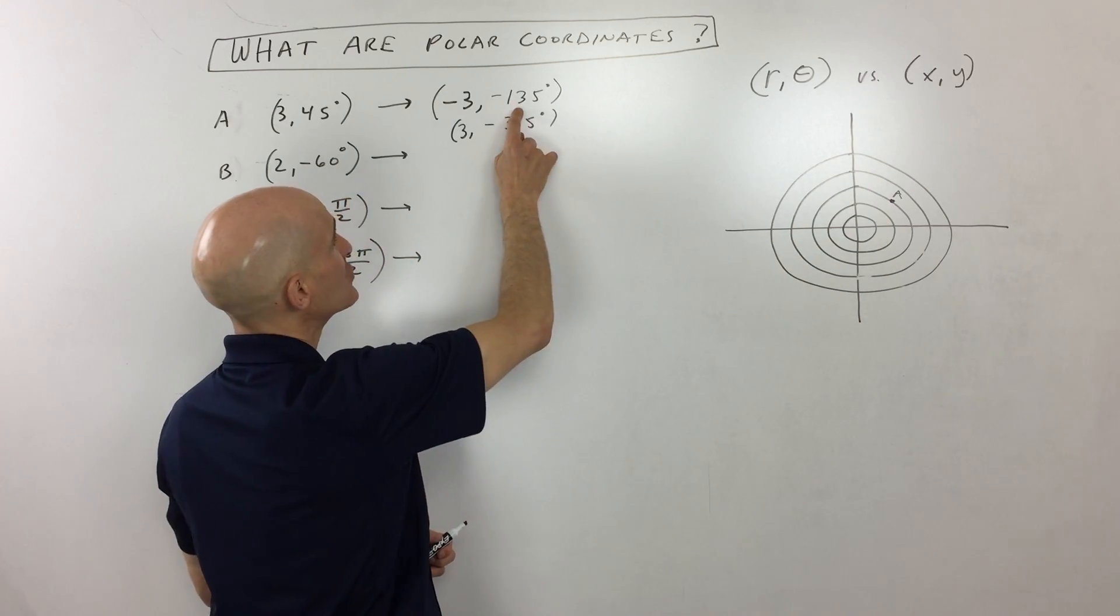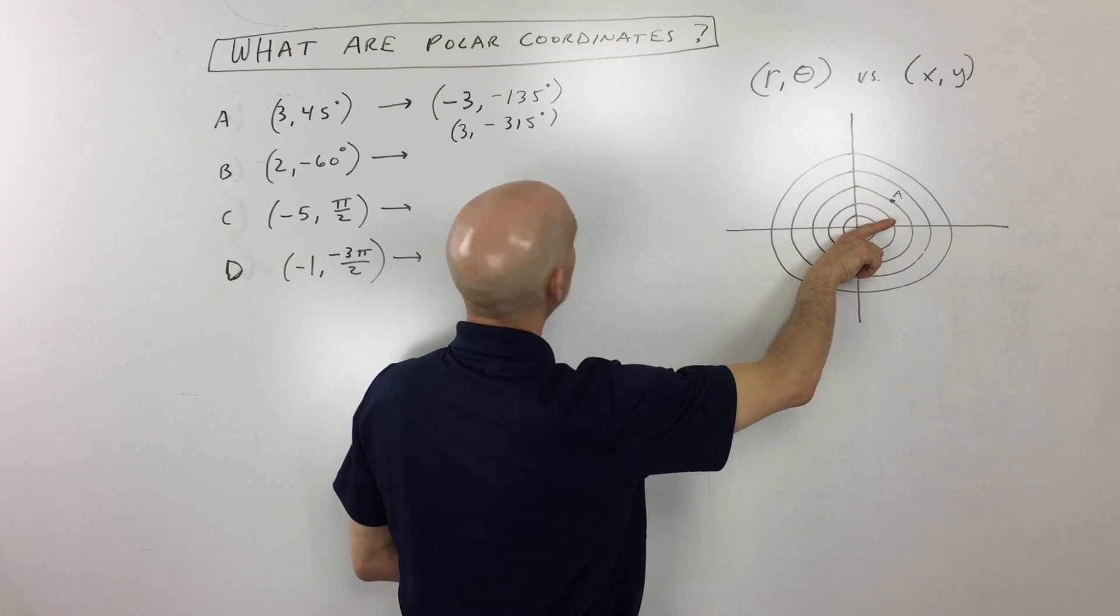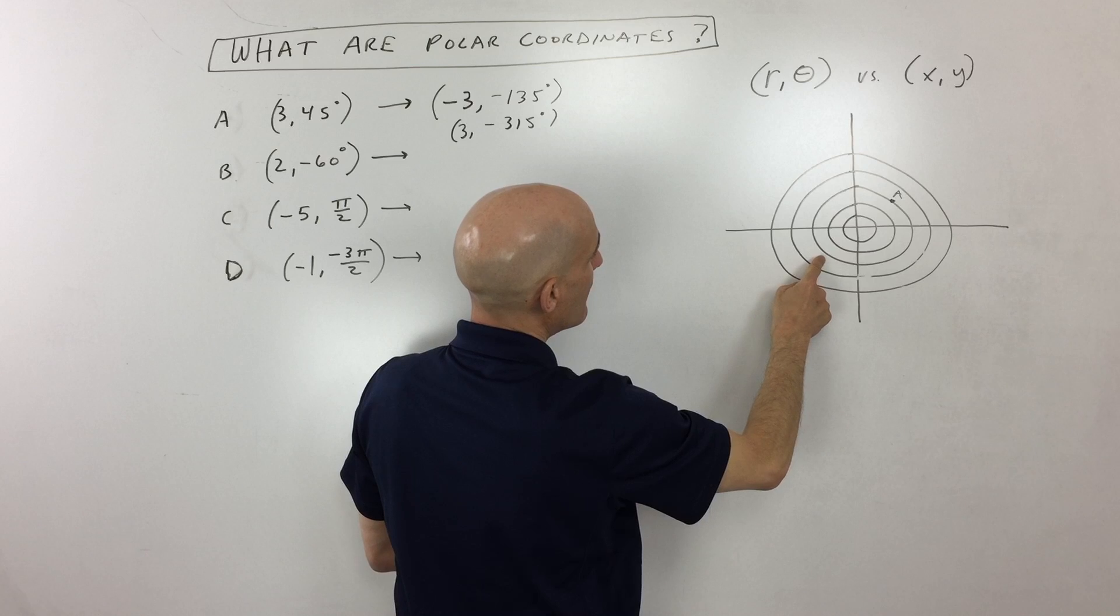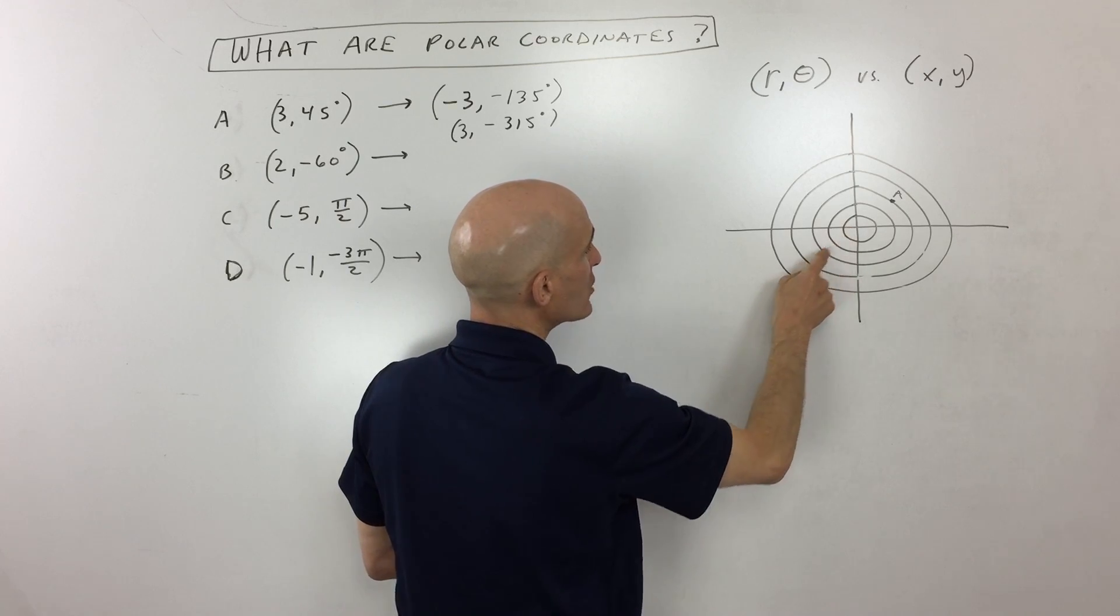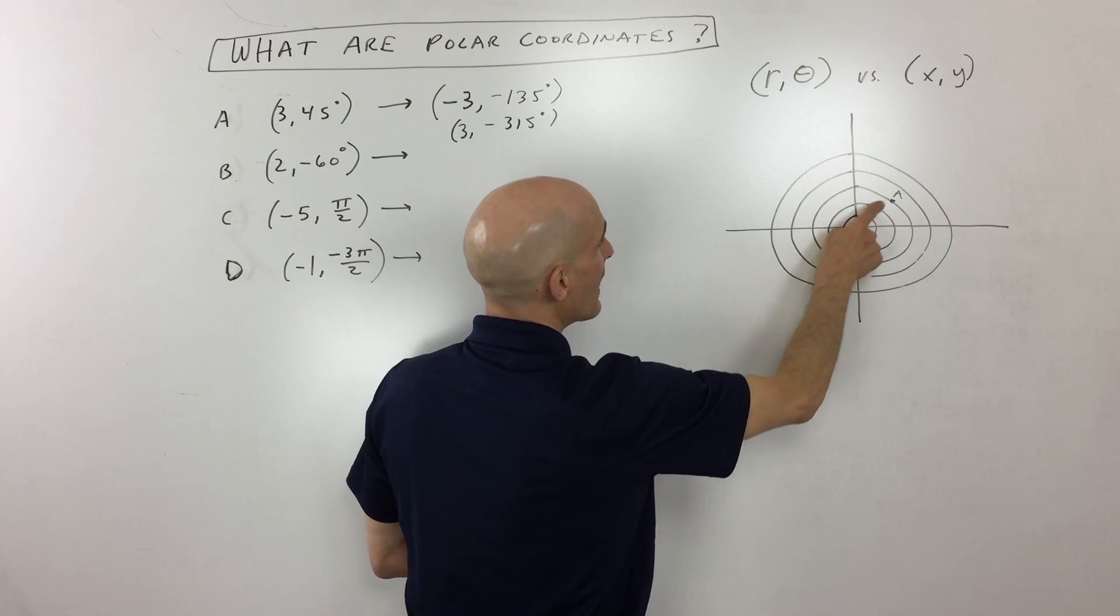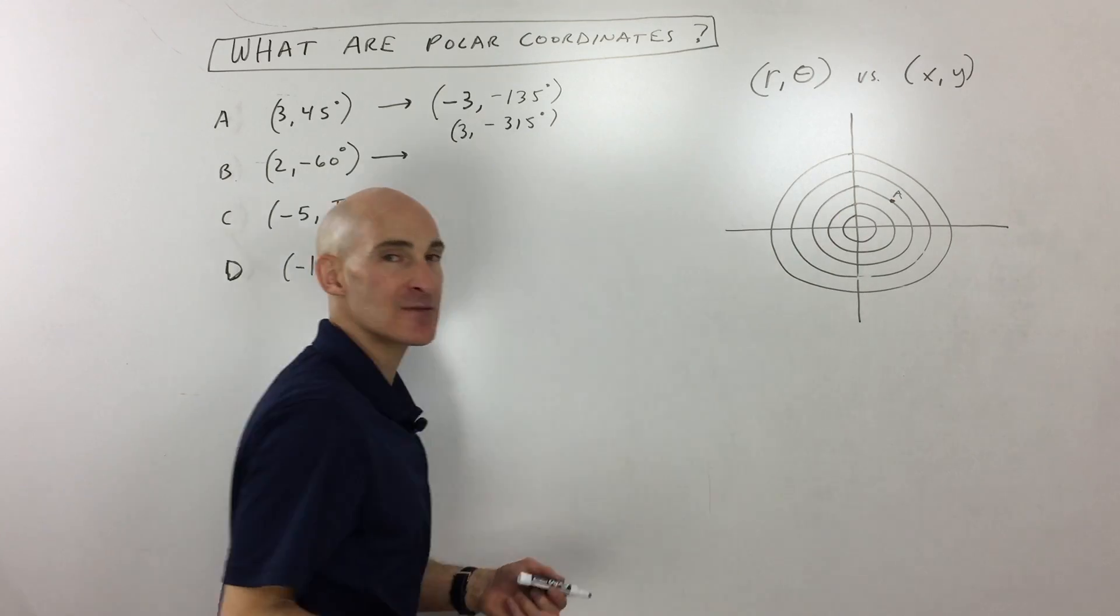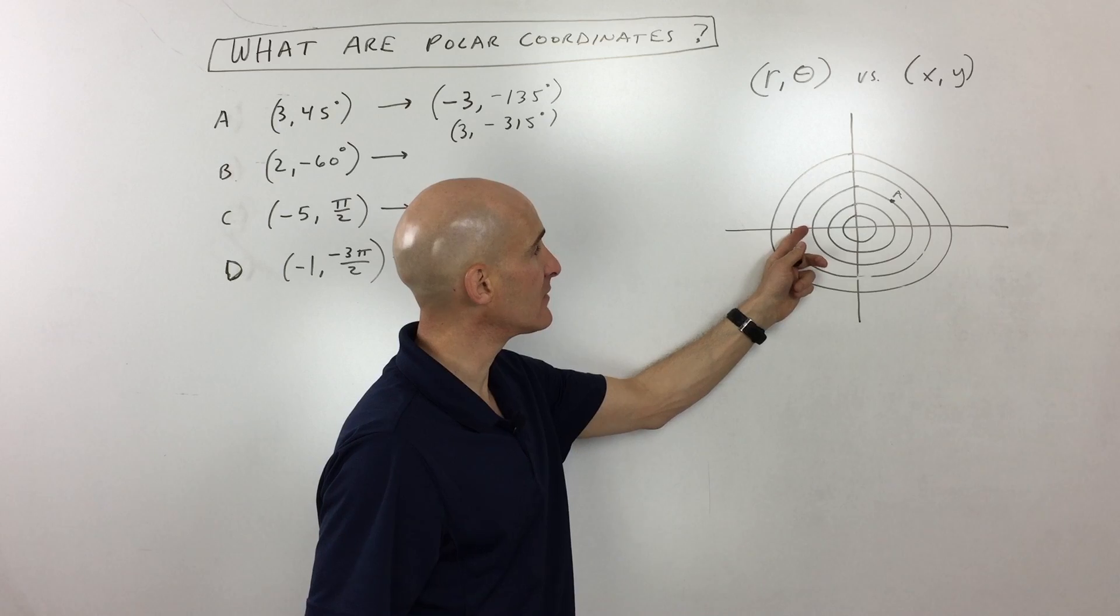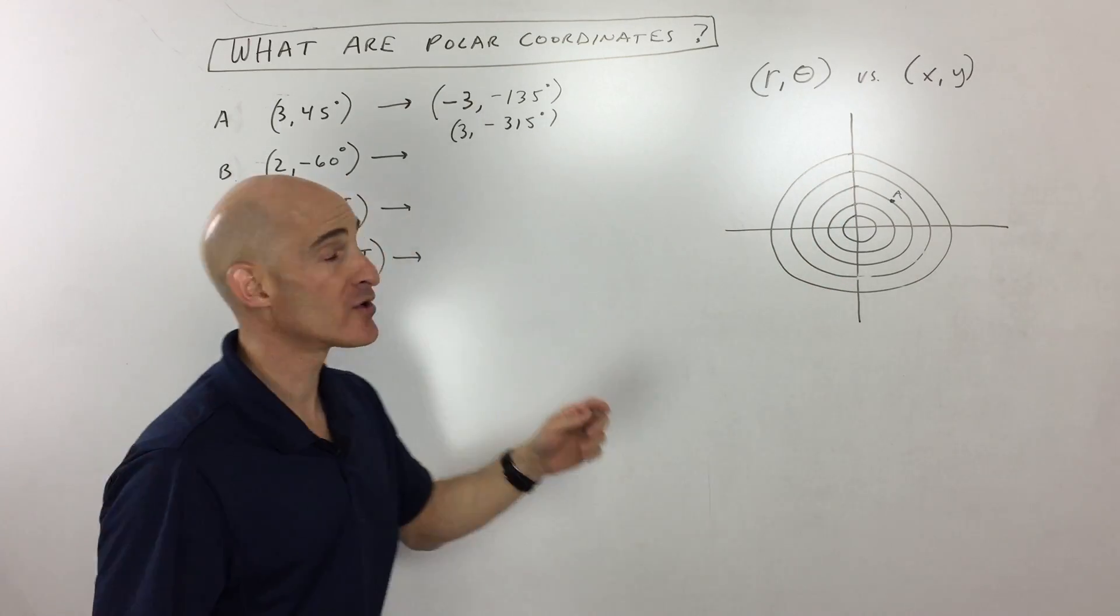Now, other people, what they like to do is they like to rotate the 135 degrees. Let's see, negative, which would be right over here. And then what they'll do is they'll go through this origin. They call that point the pole, and they'll go 180 degrees. But I find that to be a little bit confusing for students. So I like to go left if it's negative and then rotate from there.